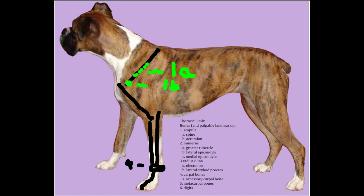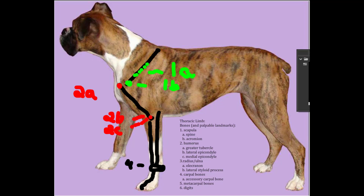For the humerus, we'll outline the position of the greater tubercle, which is on the cranial lateral aspect of the bone — that's 2a. We'll also indicate where the lateral epicondyle is, on the distal lateral aspect of the humerus — also palpable, that's 2b. 2c is the medial epicondyle, which we'll envision on the medial aspect of the bone, on the other side of the condyle.